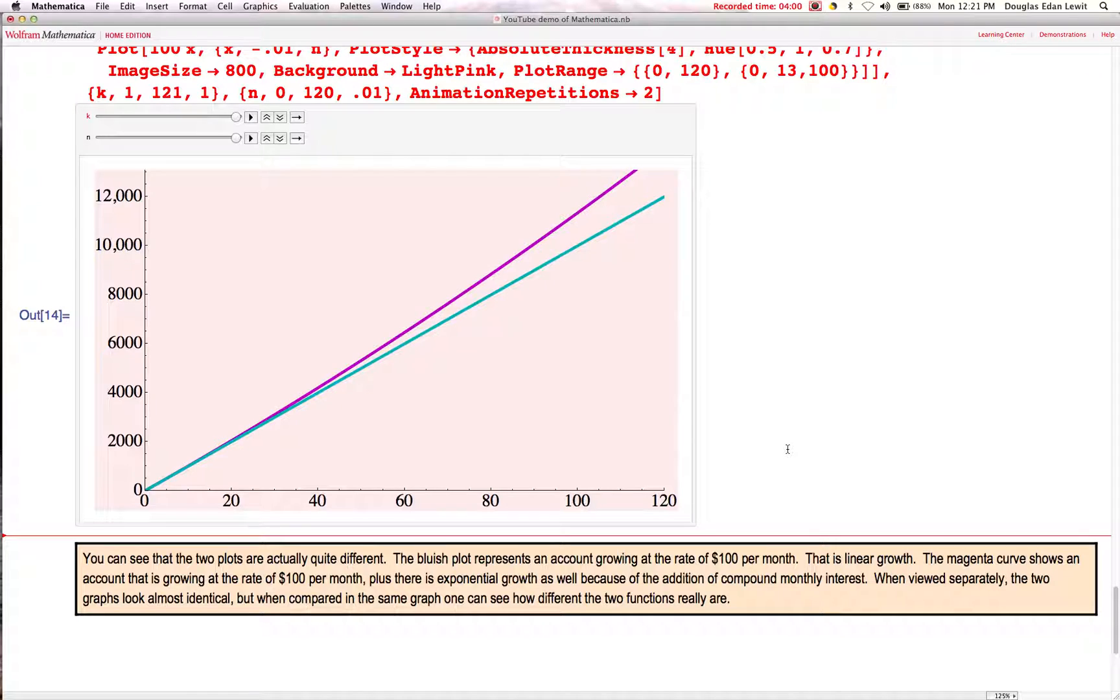The purple, magenta line represents saving $100 every month with the addition of 3% interest. Around here, you can see at the beginning, up until maybe 40 months, the two curves are practically the same. But then, something happens when you reach 40 months. You can see that they start to separate. The purple line gets bigger, faster.